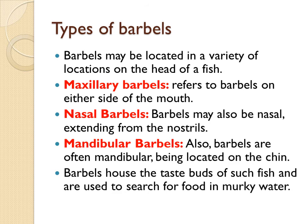Now we will discuss the types of barbels. Barbels may be located in a variety of locations on the head of a fish, and the majority of authors classify them in three categories: maxillary barbels, nasal barbels, and mandibular barbels. Maxillary barbels refer to barbels on either side of the mouth. Nasal barbels are those which extend from the nostrils of a fish. Mandibular barbels are the type located on the chin.